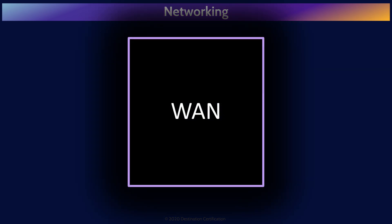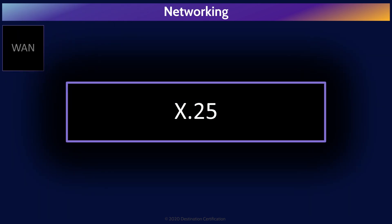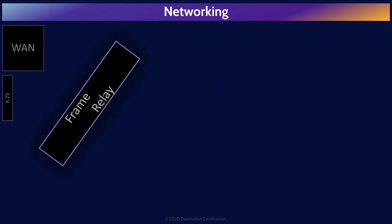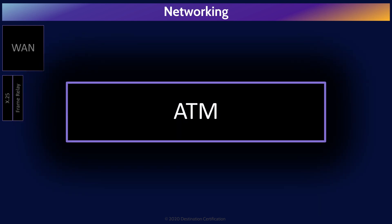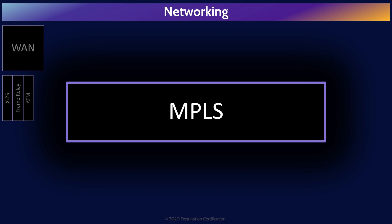There are a few protocols that have been created over the years to enable wide area networks that you should know about. X.25 was one of the first protocol suites for packet switched networks across a WAN, first published back in 1976, before IP version 4 and the OSI model. Frame relay mostly replaced X.25. ATM, asynchronous transfer mode, then mostly replaced frame relay. And now MPLS, multi-protocol label switching, which can encapsulate various protocols including frame relay and ATM, has become the dominant wide area network protocol today.